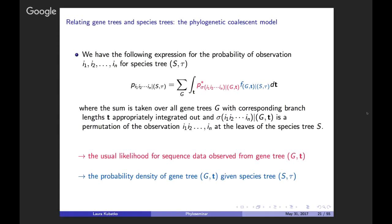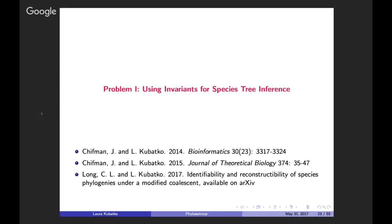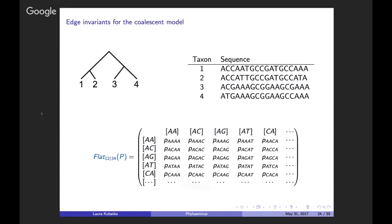I'd like to talk about three particular problems for which invariants provide both a computationally feasible and statistically sound approach. The first is using invariants for species tree inference. We return to the idea of edge invariants, but now the entries of the flattening matrix represent site pattern probabilities under the coalescent model. The question is: what should the rank of this matrix be when there are many underlying coalescent gene tree histories?